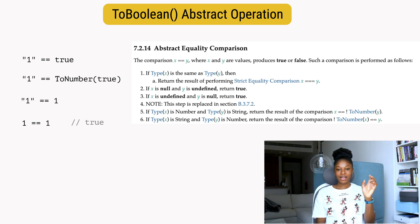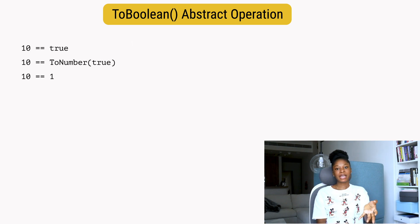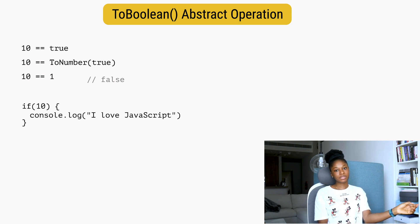So according to the MDN, truthy values are values that are considered true when evaluated in a boolean context. If we try to compare the number ten to true, we'll get false because true is not loosely equal to ten or any other truthy value in JavaScript except the number one. But if a truthy or falsy value is used in a boolean context, an if statement for example, using the ToBoolean abstract operation, JavaScript would try to convert it to its boolean equivalent first before going on with anything else.